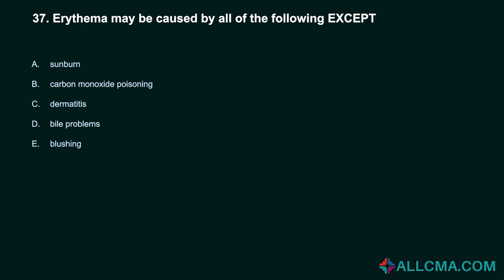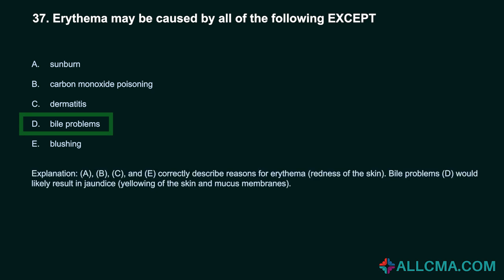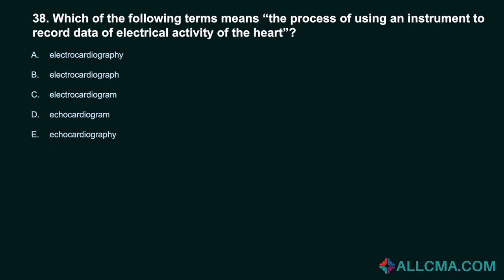Question 37: Erythema may be caused by all of the following except: A. Sunburn. B. Carbon monoxide poisoning. C. Dermatitis. D. Bowel problems. E. Blushing. Correct answer: D. Bowel problems. Sunburn, carbon monoxide poisoning, dermatitis, and blushing correctly describe reasons for erythema — redness of the skin. Bowel problems would likely result in jaundice, yellowing of the skin and mucous membranes.